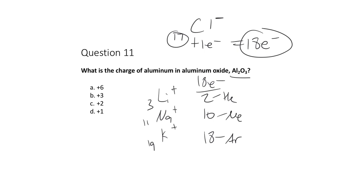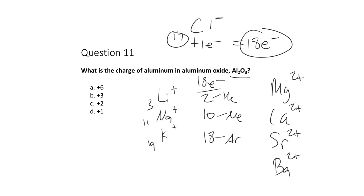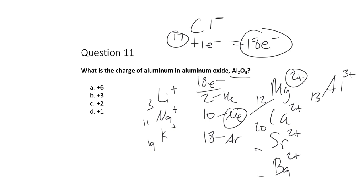So atoms close to noble gases can lose or gain electrons to reach that stable count. The alkali group forms +1 cations, the alkaline earth group — magnesium, calcium, strontium, barium — forms +2 cations. Aluminum, with 13 protons, loses three electrons to match neon's electron count, forming a +3 cation. So magnesium with +2 has 10 electrons, and aluminum with +3 also has 10 electrons, matching neon.